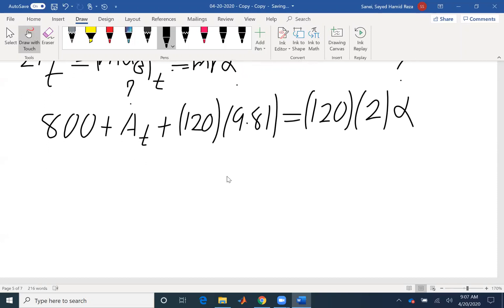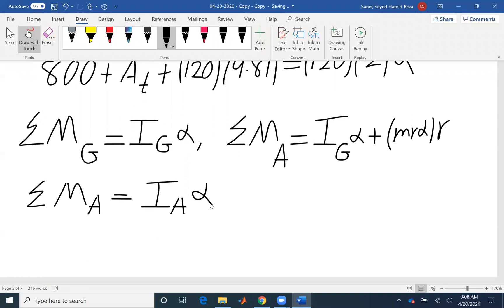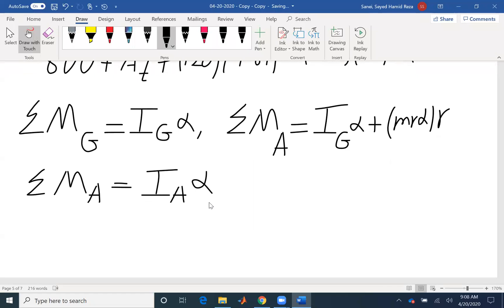I need to resort to my third equation, summation of moment. Because it's a fixed point, you have multiple options. You can write summation of moment about G I_G alpha. You can write summation of moment about point A I_G alpha plus M R alpha R. Or because it's a fixed point, I can write summation of moment about point A I_A alpha. Summation of moment about A, force 800 newtons, which is acting on the end of the beam. It's going to create a moment here.